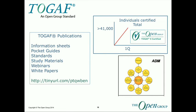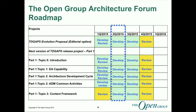TOGAF — we're now over 41,000 certified individuals around the world, nearly 42,000 actually. Take a look at the publication site; we need to tidy it up a little bit but there's an awful lot of information there. The architecture forum is starting to make progress on the evolution of TOGAF and we'll see more of that this week.